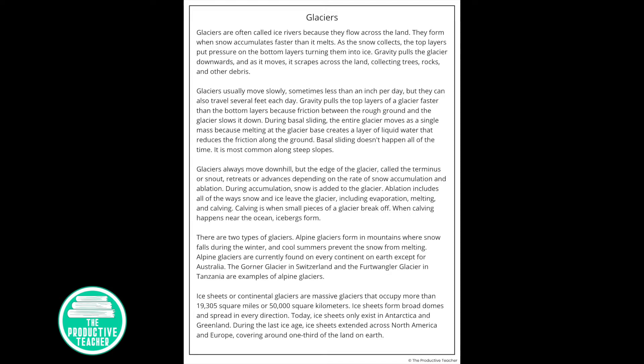During basal sliding, the entire glacier moves as a single mass, because melting at the glacier base creates a layer of liquid water that reduces the friction along the ground. Basal sliding doesn't happen all of the time — it's most common along steep slopes.